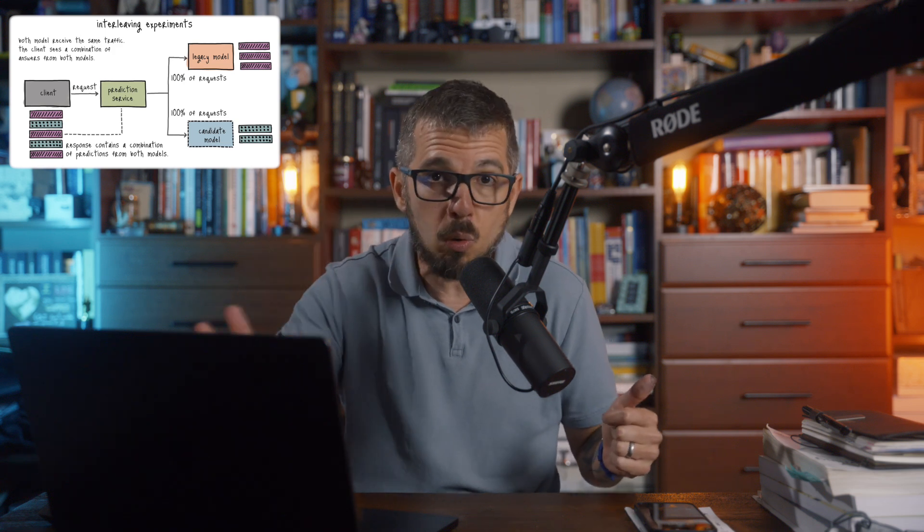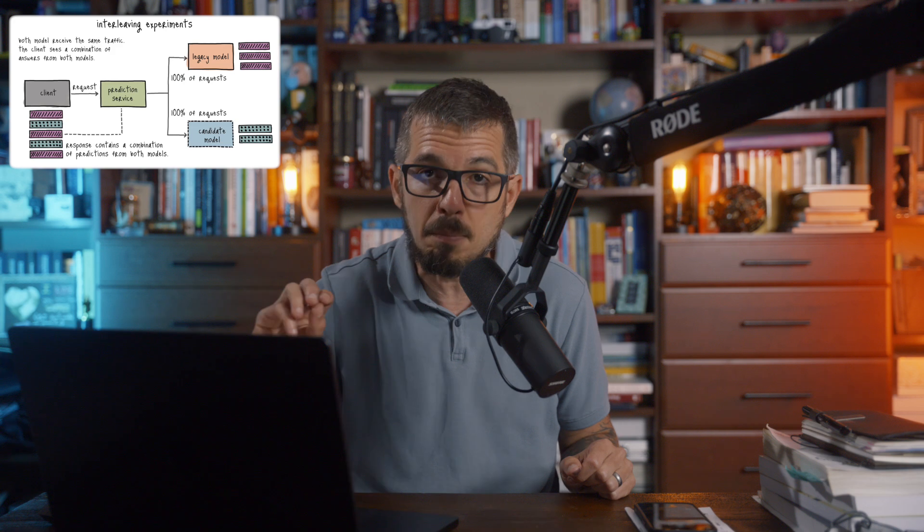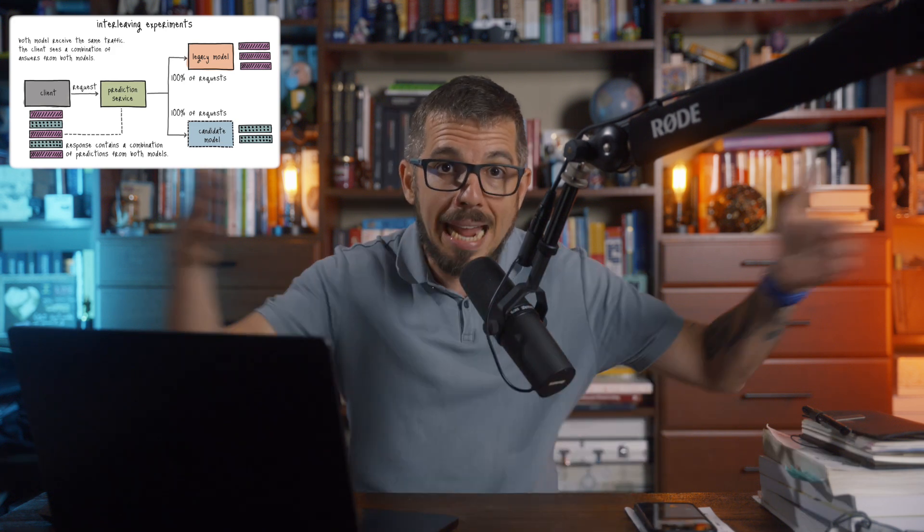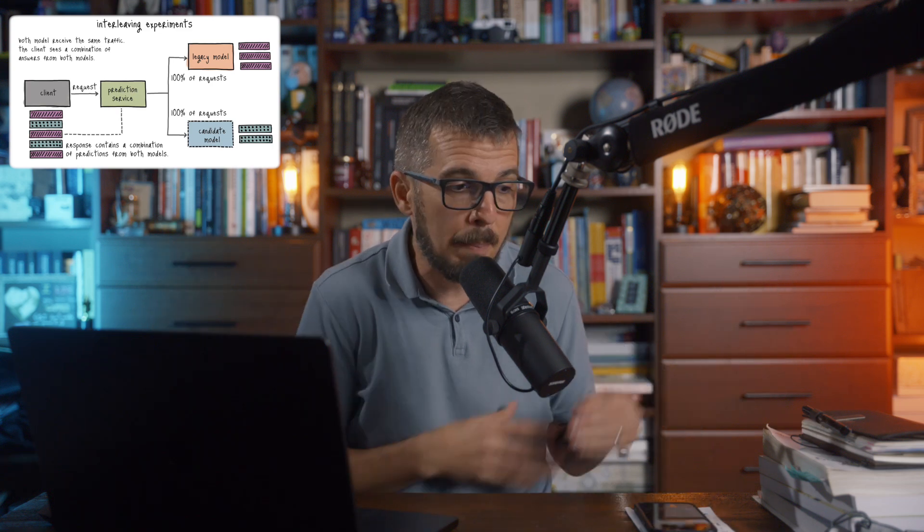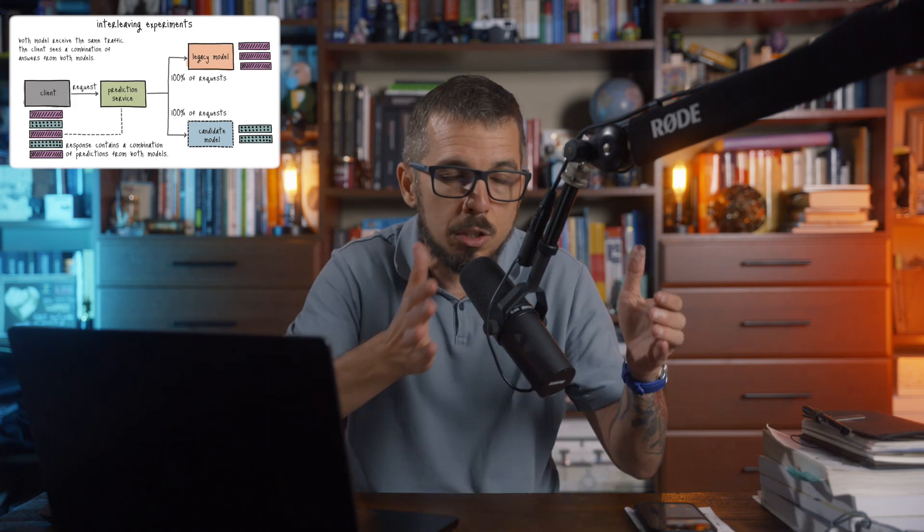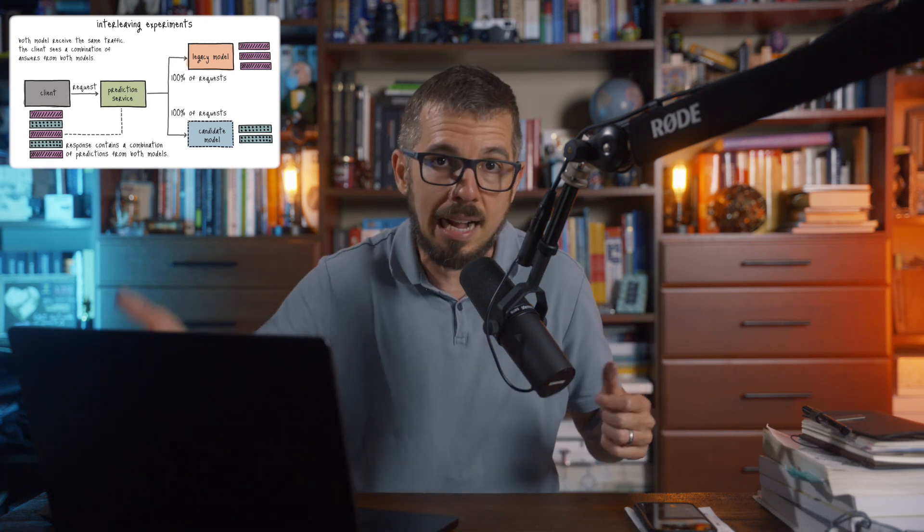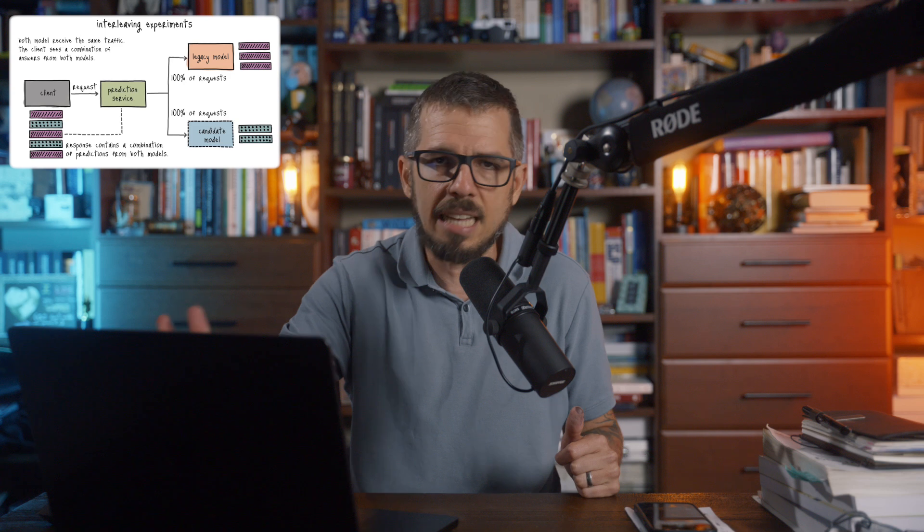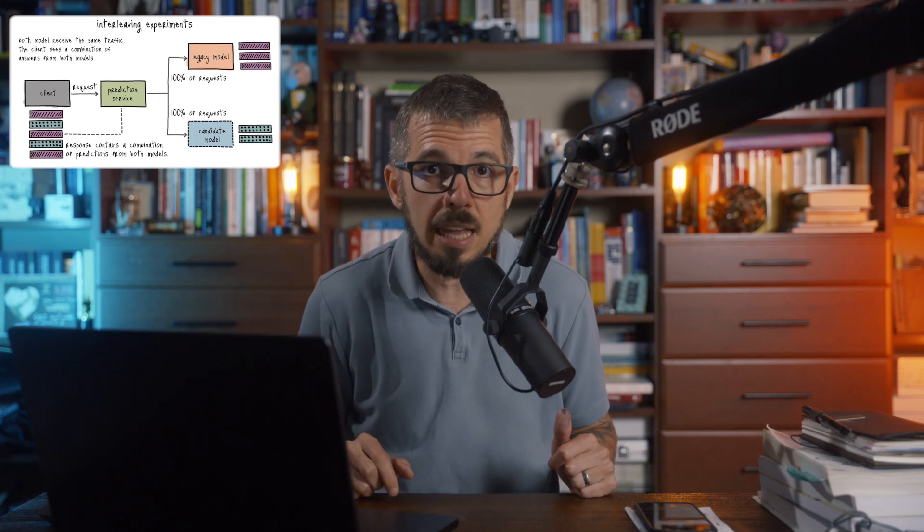Hopefully that makes sense. This is a very cool way to test anything that requires user feedback—a good way to test a model with real production data without putting your entire system at risk by deploying a model that's not good enough. You can test this gradually, little by little. You can increase the number of recommendations from the candidate model until you build the confidence to deploy that candidate model and make it your champion model. Hopefully this helps, and I'll see you later with more tips.